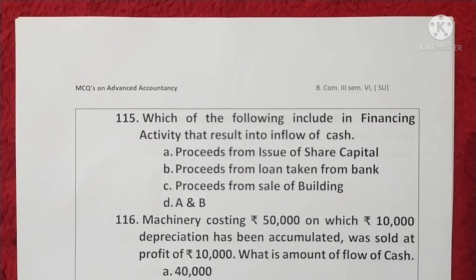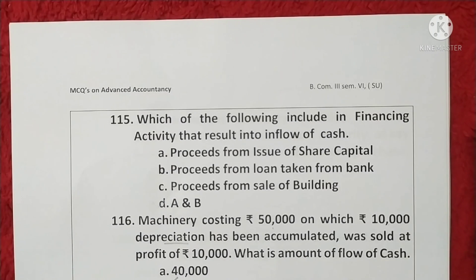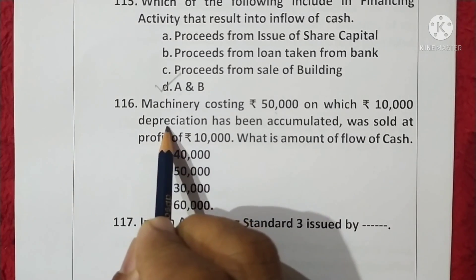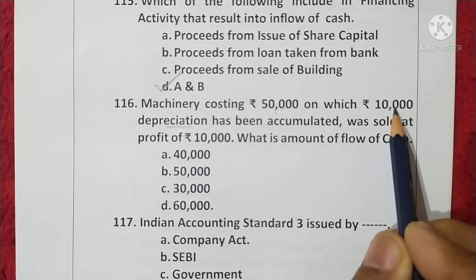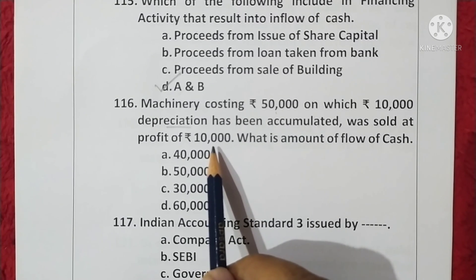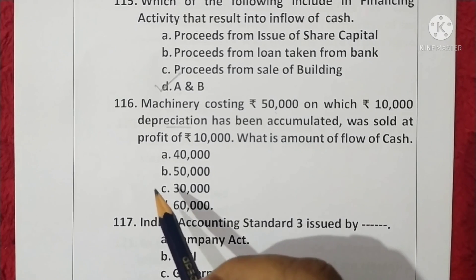Question 115. Which of the following is included in financing activity that results in inflow of cash? Proceeds from issue of share capital and proceeds from loan taken from bank are both financing activities. Option D is correct. Question 116. Machinery cost rupees 50,000 with accumulated depreciation of 10,000 — book value is 40,000. Sold at a profit of rupees 10,000: 40,000 plus 10,000 equals rupees 50,000 flow of cash. Option B is correct.